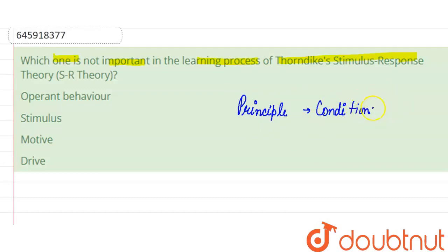If I am going to tell you about Thorndike's theory, it was trial and error theory. He provided us with the trial and error theory. We will try to do it.